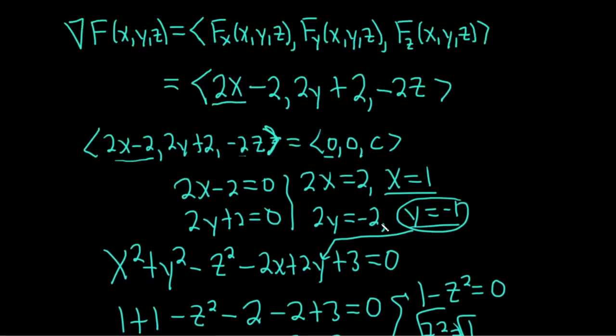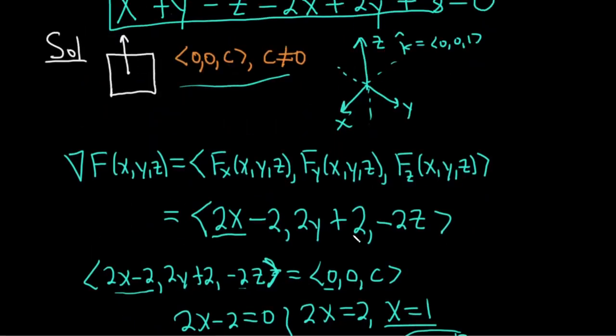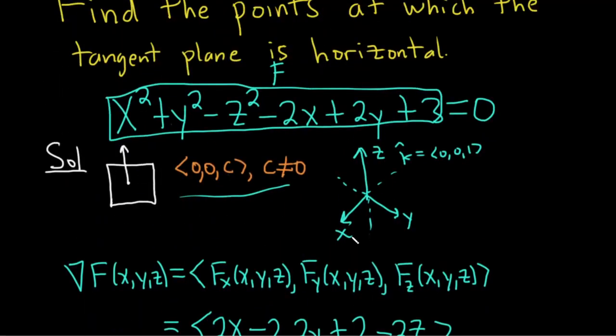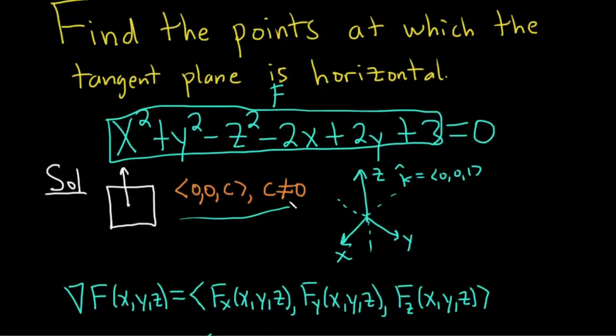So the main idea here is the beginning, right? The rest of this is pretty easy. It's the beginning part. It's this part here. You have to think about what it means for a tangent plane to be horizontal. If it's horizontal, it basically means it's horizontal.